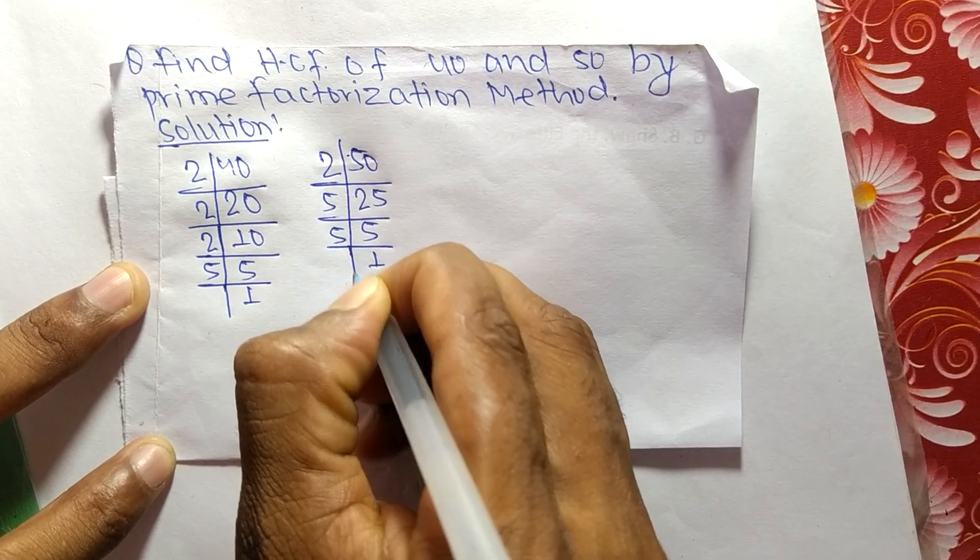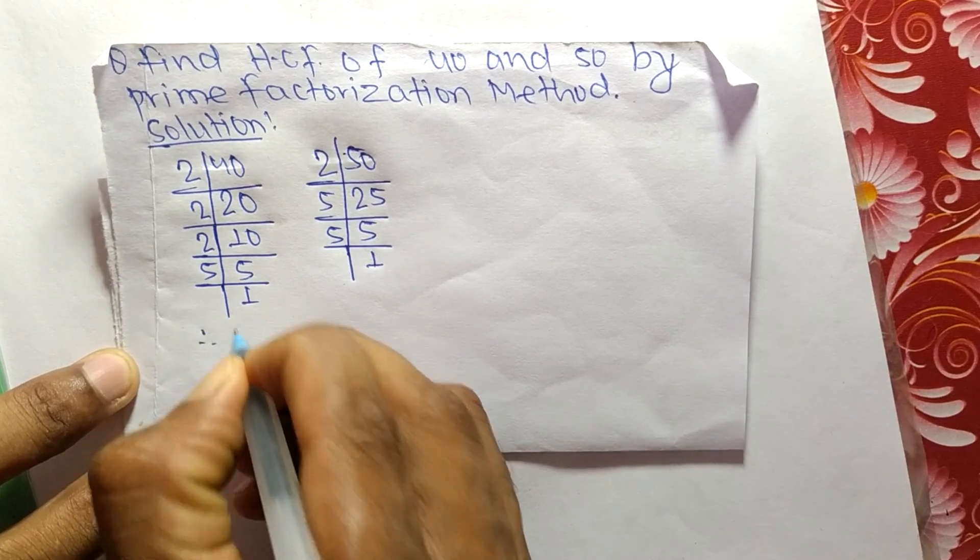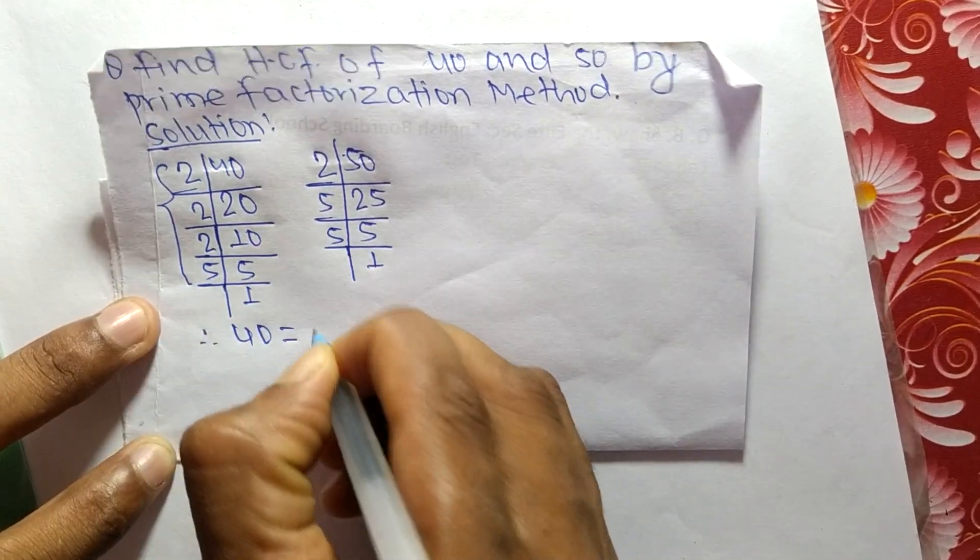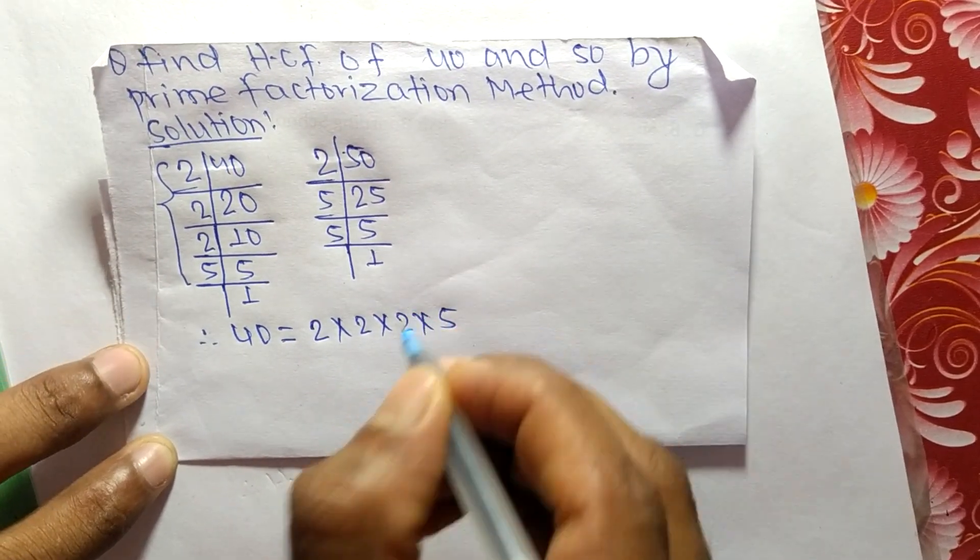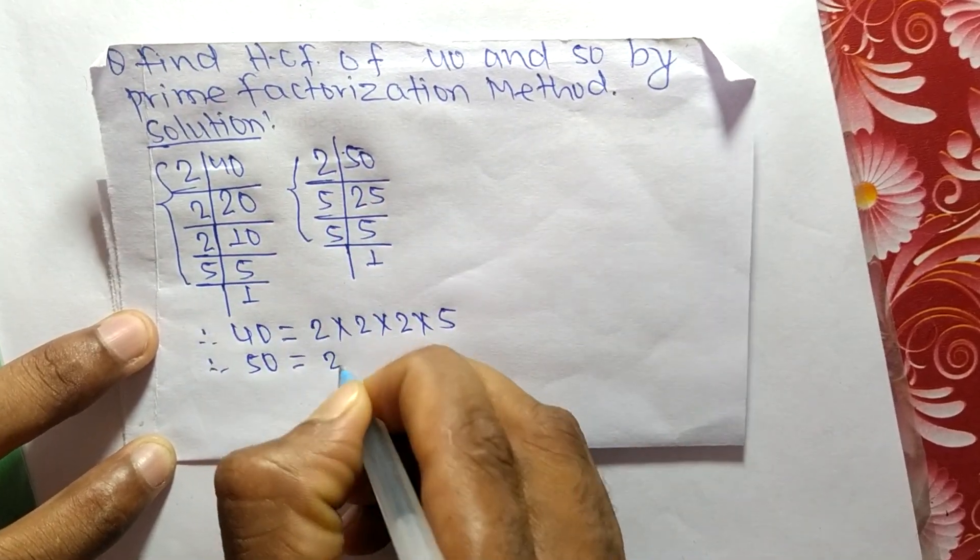Now from these prime factors, we can write 40 equals 2 times 2 times 2 times 5, and 50 equals 2 times 5 times 5.